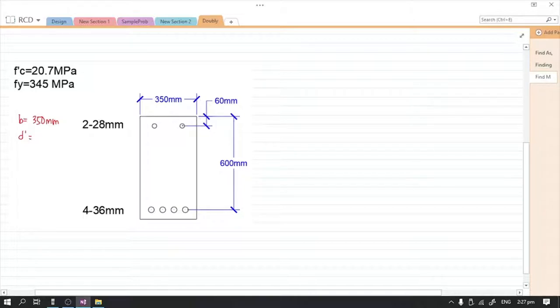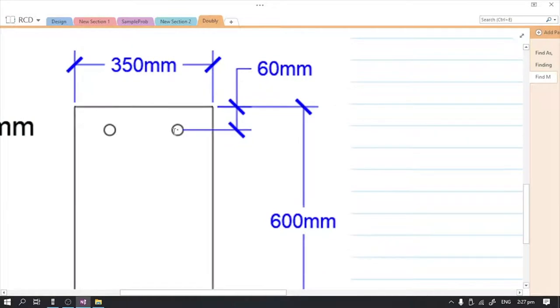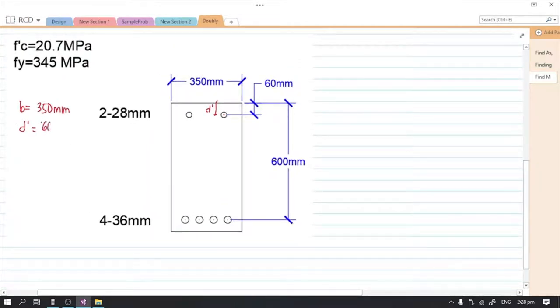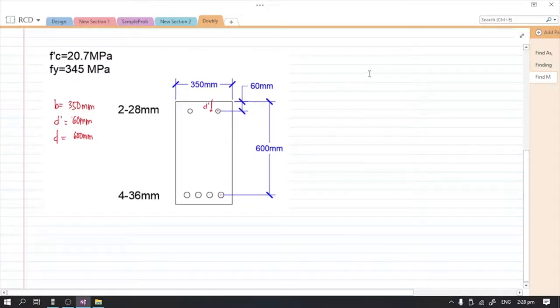And then our d prime, so the d prime is the distance from the centroid of our compression reinforcement up to the extreme concrete fiber, so our value is equivalent to 60 mm. And for our effective depth, the same thing, from the centroid of the tension reinforcement up to the extreme concrete fiber, equivalent to 600 mm. So now, how are we going to find the ultimate moment capacity of this beam? Our first step is we are going to assume for case number one that all steel yields.